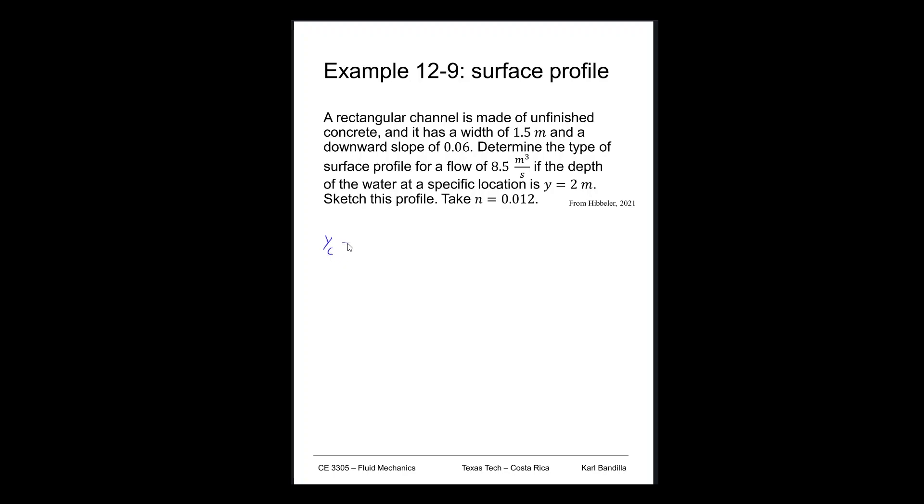It's the easiest one. Yc, remember that is q squared over b squared times g to the one-third. It's the easiest one because we have everything handy. So that would be 8.5 cubic meters per second squared, width is 1.5 meters squared times 9.81 meters per second squared. All that to the one-third gives me 1.48478 meters. So that's our first one.